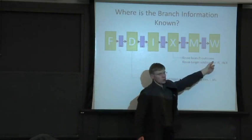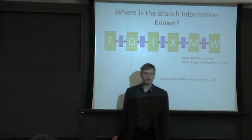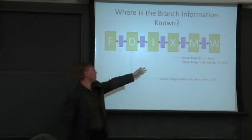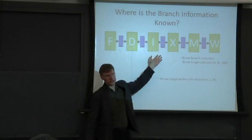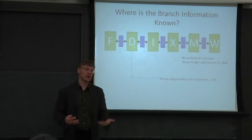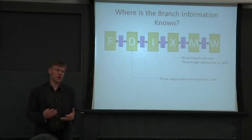In the execute stage, we know the branch outcome. We talked about a trick in MIPS where you can try to pull that forward a stage into our decode stage by having some sort of special comparator on the output of a register file, comparing it with zero. But that doesn't work for all branch types.